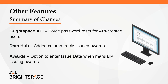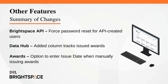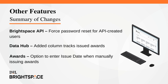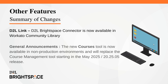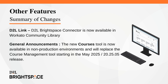Finally, let's take a quick look at the other features for this month's release. In the Brightspace PI, you can now force a password reset for API-created users. DataHub now includes a column that tracks issued awards. Awards has added the option to enter an issue date when manually issuing awards. For D2L Link, the D2L Brightspace connector is now available in the Workato Community Library.